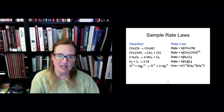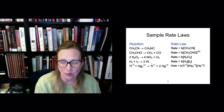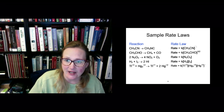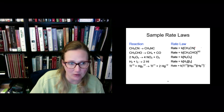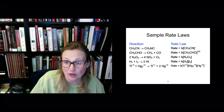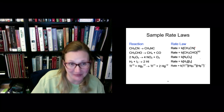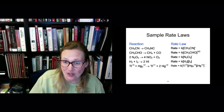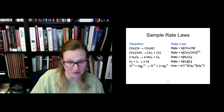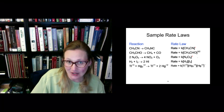Let's look at these sample rate laws. For the first reaction, the rate is first order with respect to CH3CN and it's first order overall. In the second reaction, the reaction is three-halves order — so these don't have to be integers and they don't have to be positive. In the third reaction, the reaction is first order with respect to N2O5 and first order overall. In the fourth reaction, it's first order with respect to H2 and I2 and second order overall.